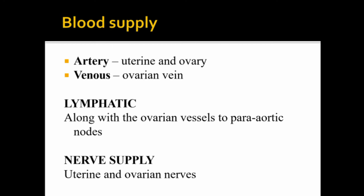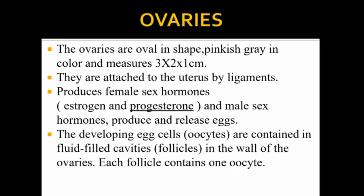The lymphatics of the fallopian tubes drain along with the ovarian vessels to the para-aortic nodes. The uterine and ovarian nerves supply the tubes. The ovaries are oval-shaped, pinkish organs measuring 3 x 2 x 1 cm, attached to the uterus by ligaments. They produce female sex hormones — oestrogen and progesterone — as well as some male sex hormones, and they release eggs.